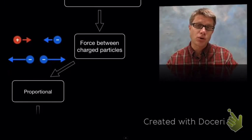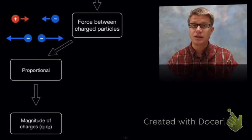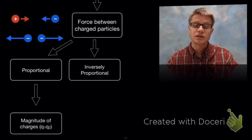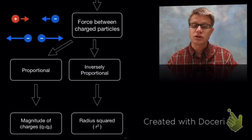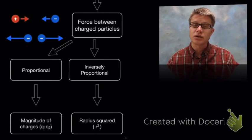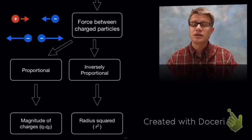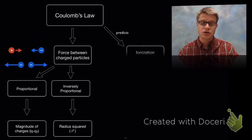Coulomb's Law tells us the force between charged particles is proportional to their charges — you just multiply the two charges and that gives you the magnitude. It also tells us that it's inversely proportional to the square of their radius, in other words how far they are apart. If things are far apart, it's going to be less force; as they get closer, the force gets greater. It's very similar to Newton's Law of Universal Gravitation.